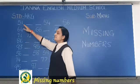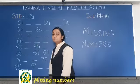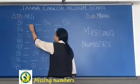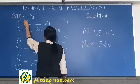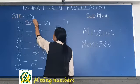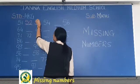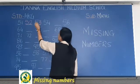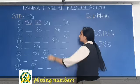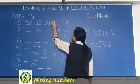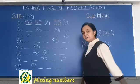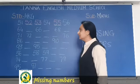Here you can see 51. What will come after 51? Write there 52. Then 53. Then 54 is written, so write 55. And 56 is already written.